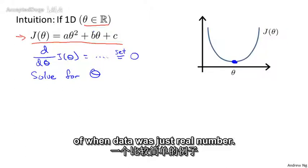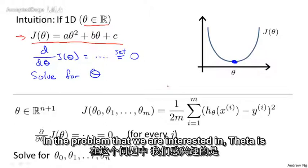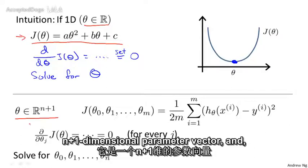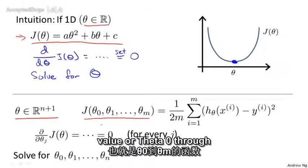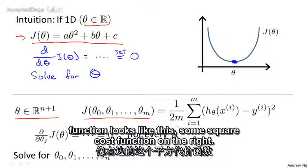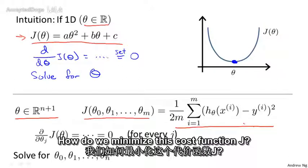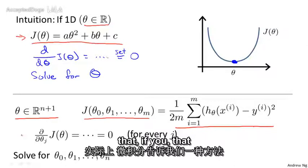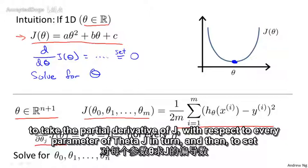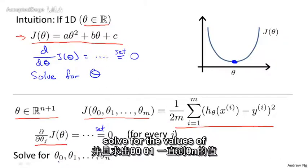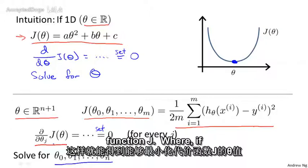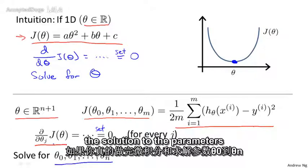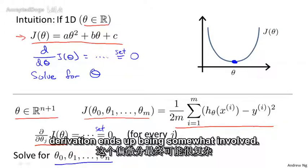That was the simpler case when theta is just a real number. In the problem we're interested in, theta is no longer just a real number but instead is an n+1 dimensional parameter vector. The cost function J is a function of this vector — theta 0 through theta n — and looks like this sum of squared cost function. To minimize J, calculus tells us we take the partial derivative of J with respect to every parameter theta j in turn, and then set all of these to zero.